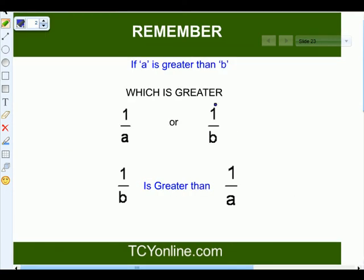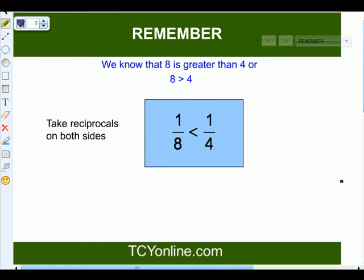Now remember, if A is given greater than B, then which will be greater, 1 over A or 1 over B? Obviously, 1 over B will be greater than 1 over A. For example, we know that 8 is greater than 4. Now we take the reciprocal. So 8 becomes 1 over 8, and 4 becomes 1 by 4. So obviously, 1 over 8 is lesser than 1 over 4.